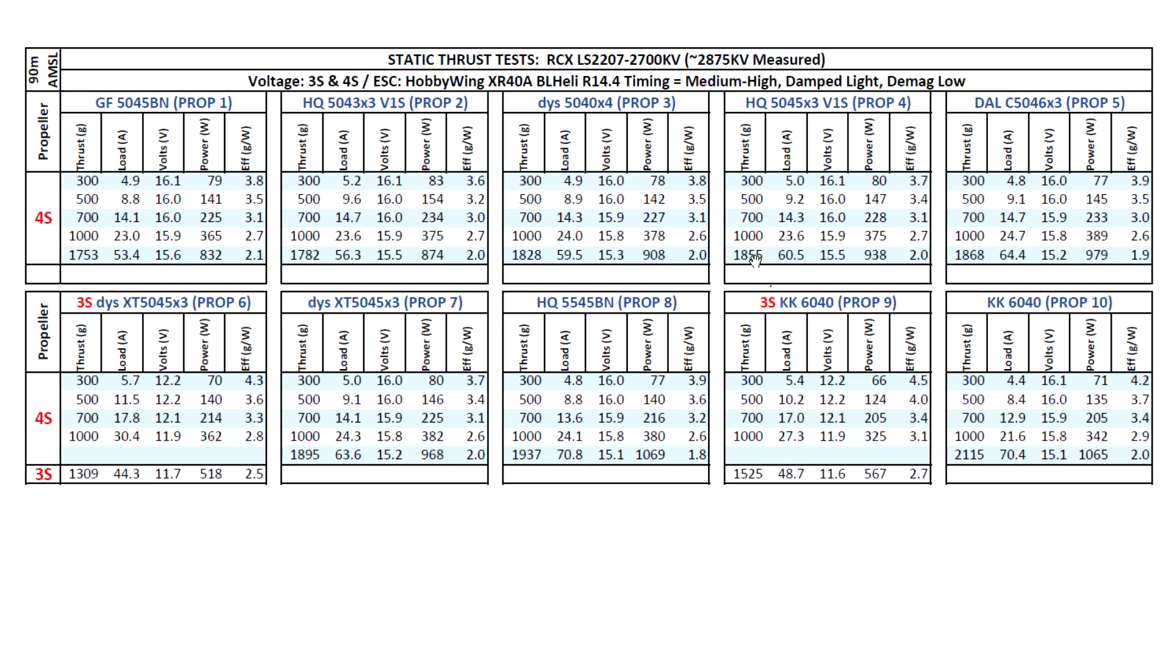Then on to the more aggressive props. 50-46 and the 50-45x3. 1868 and 1895, almost 1900 grams at 64 amps, basically. Then the HQ 55-45 BN, 1937, approaching 2 kilograms at 71 amps. So quite high. And then we move on to the 6-inch prop. Over 2 kilograms. 2115. That's probably one of the highest output 2207s that I've tested, I think.